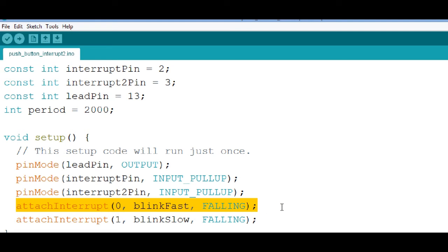Interrupt 0, I call it blinkFast. And he's going to be triggered on a falling edge. And interrupt 1 is called blinkSlow. He's going to be triggered on a falling edge.